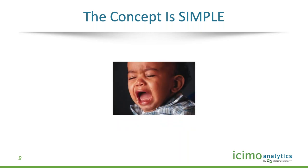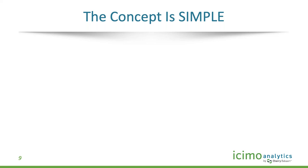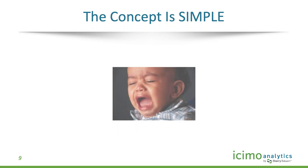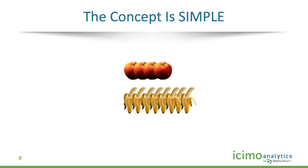Those of you with children understand what this next image means — those without also know it. You sat next to this in a restaurant or on an airplane. It means one of two things: either empty or full, and it needs to be dealt with right away. We know what action to take based on the visualization of what we're seeing. That's what we want to accomplish with data visualization: keeping it simple.